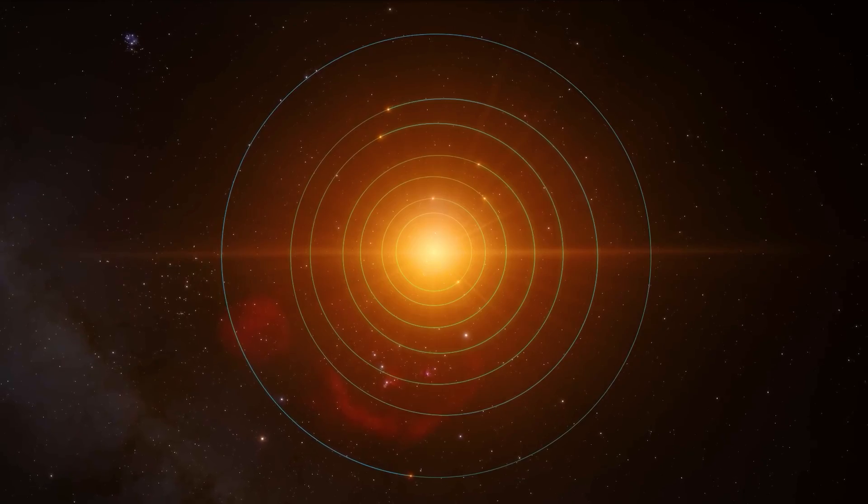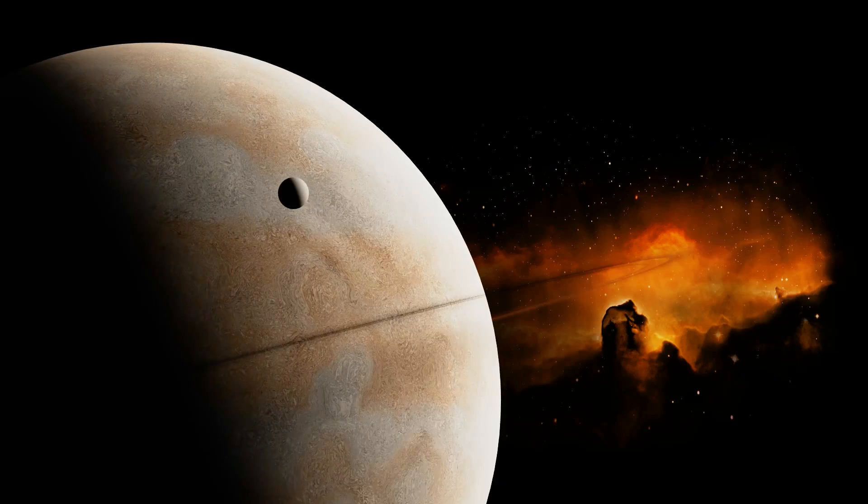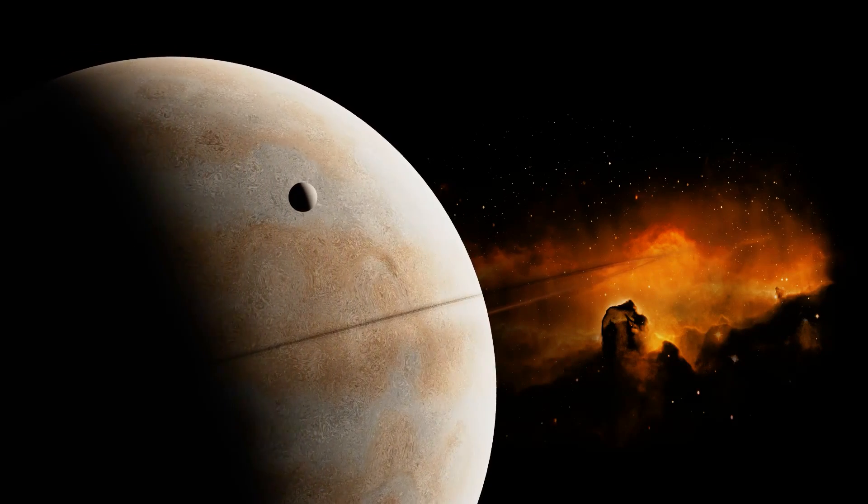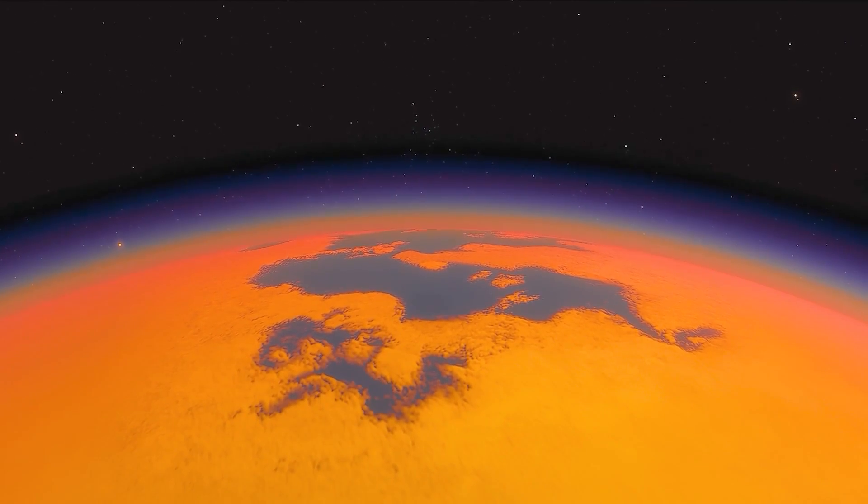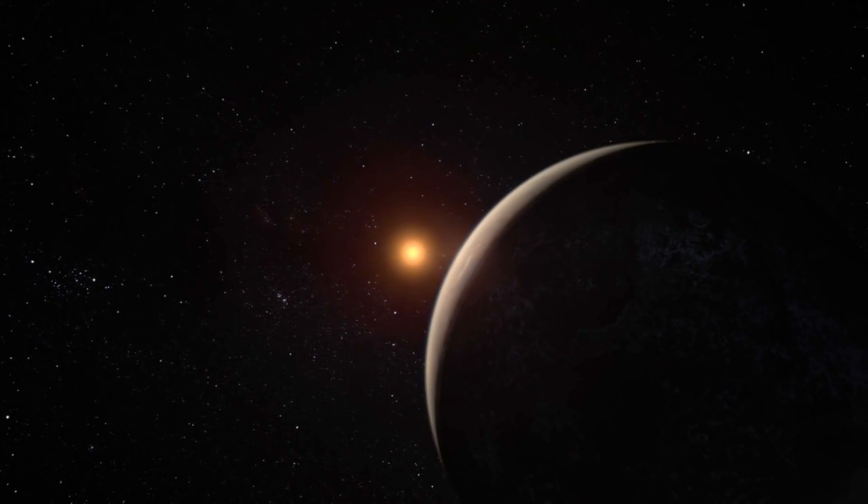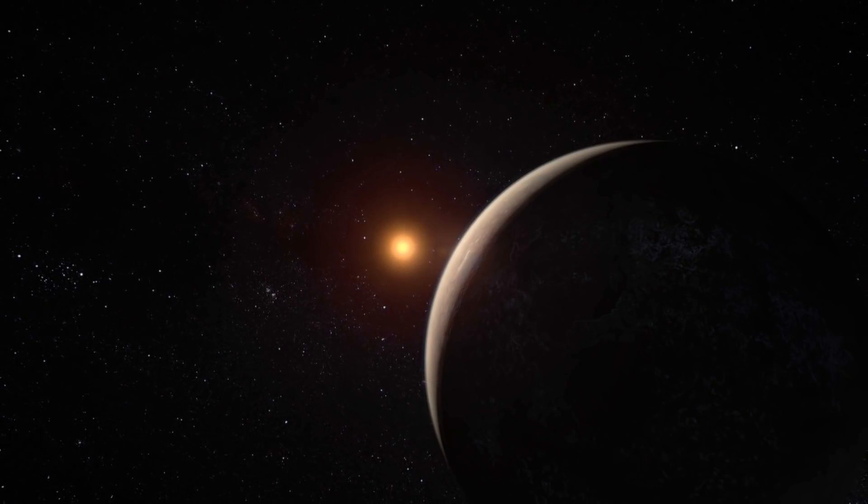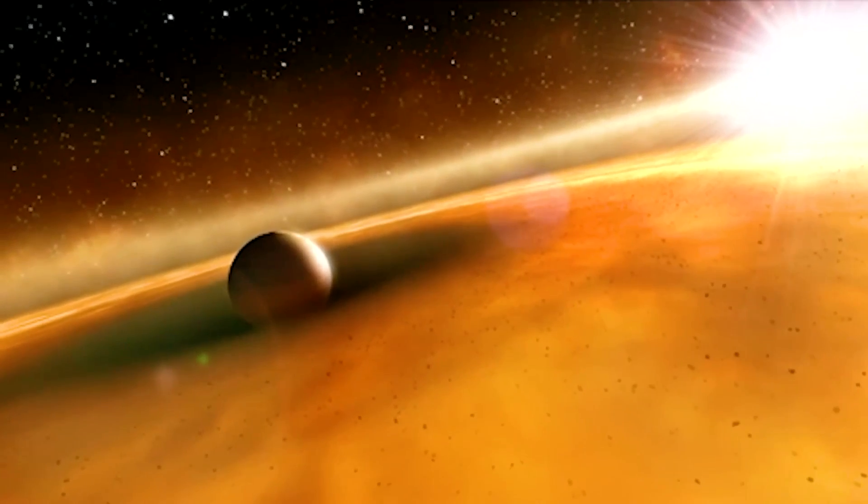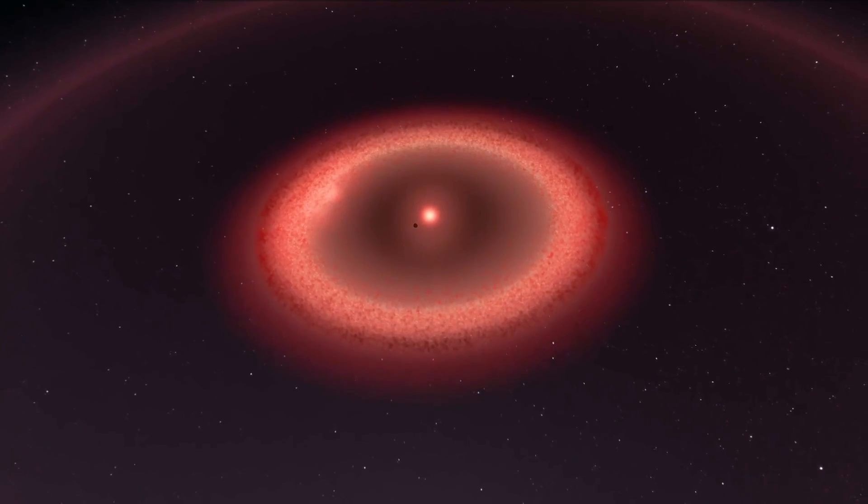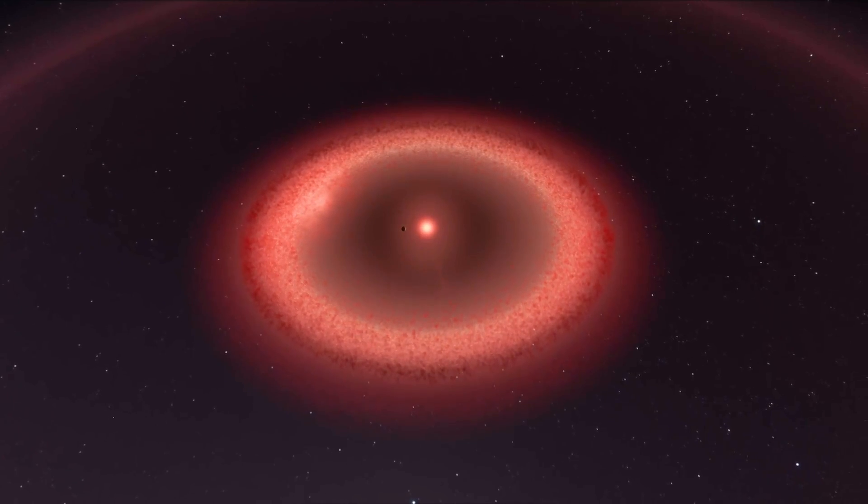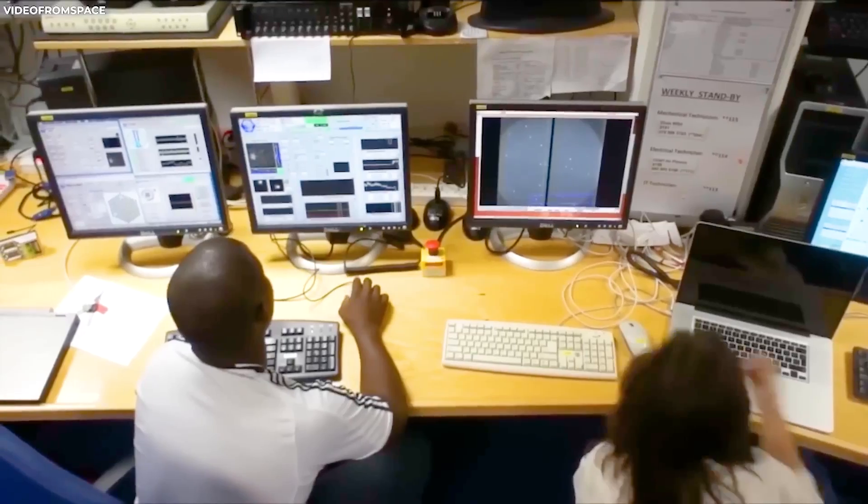It was impossible to tell from earlier observations of TRAPPIST-1b whether the object was a barren rock, or whether it actually had an atmosphere. One side of the planet is trapped in everlasting night while the other is continually facing its star, because the planet is tidally locked to its star. According to simulations, the planet's temperature would be lower if it had an atmosphere, since the air would disperse the heat to all directions.